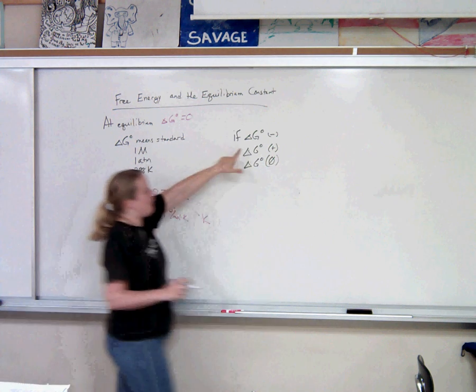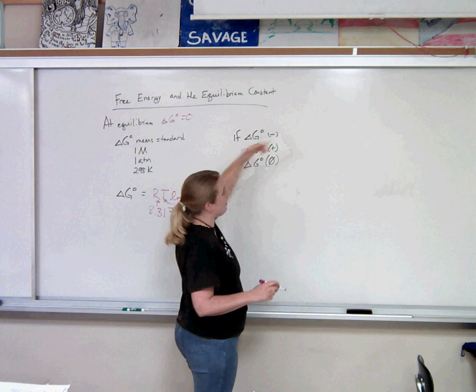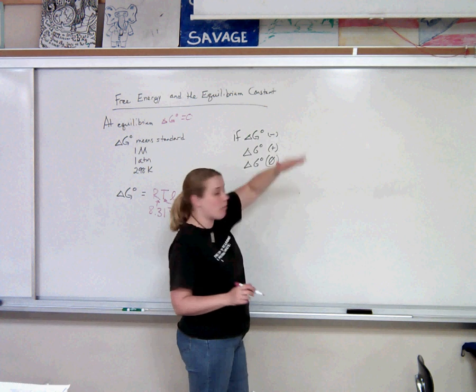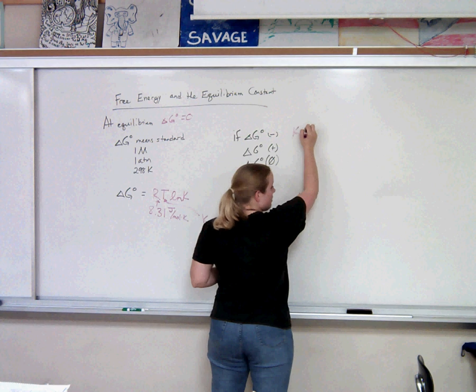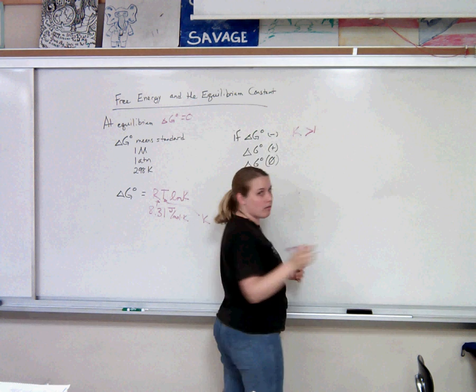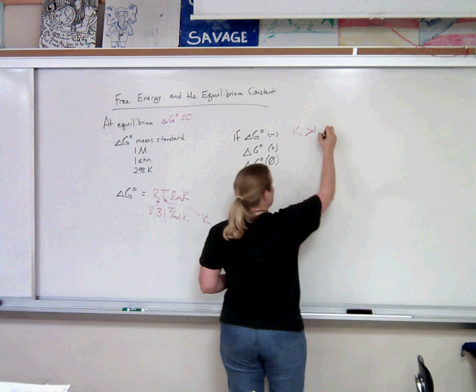We already know that if Gibbs is negative, then we are in a spontaneous reaction, meaning spontaneous going forward. And so then K is going to be greater than 1, and we talked about what that means at the beginning of this unit, because that means that the equilibrium lies to the right.